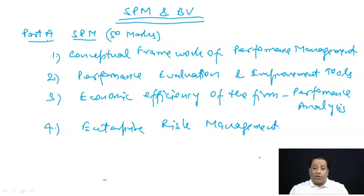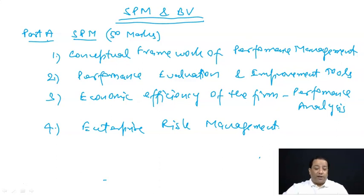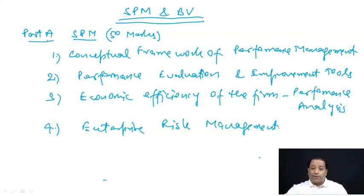In the second chapter we evaluate performance and there are certain improvement tools — if the target we set is not achieved, what improvement tools can be used to complete it. In the third chapter: economic efficiency of the firm — how to achieve economic efficiency and performance analysis. Fourth chapter: enterprise risk management. SPM includes mainly 60–70% theoretical part and 30–40% practical part.